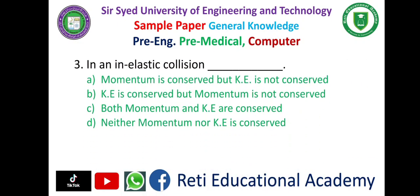Question number 3. In an elastic collision: A. Momentum is conserved but kinetic energy is not conserved. B. Kinetic energy is conserved but momentum is not conserved. C. Both momentum and kinetic energy are conserved. D. Neither momentum nor kinetic energy is conserved. And the correct answer is A: momentum is conserved but kinetic energy is not conserved.